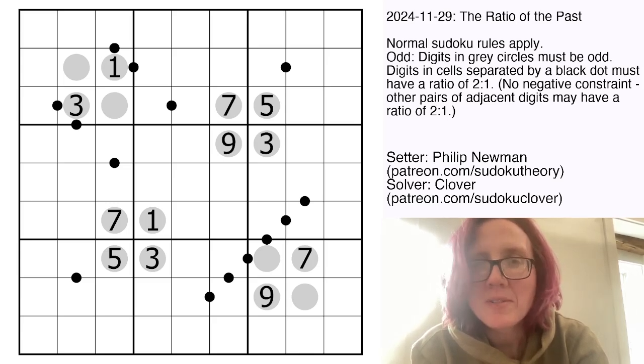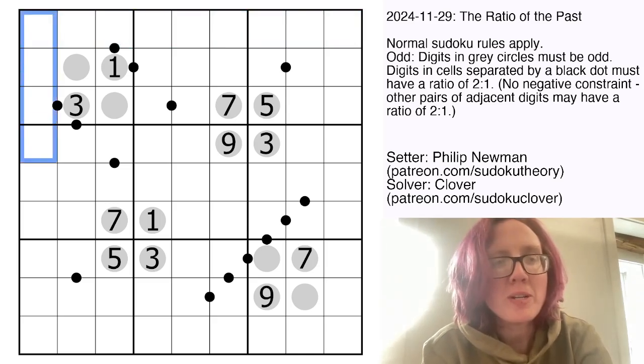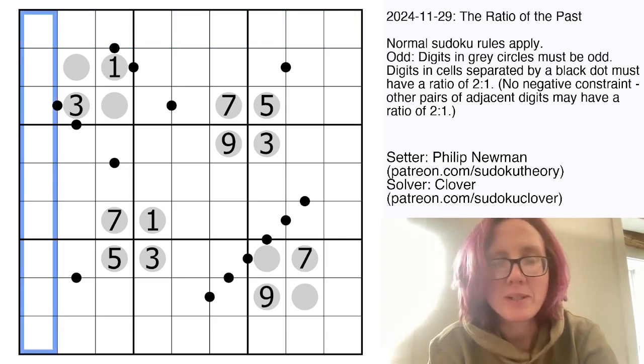Normal Sudoku rules apply. We're placing the digits 1 through 9 once each in each row, each column, and each outlined 3x3 region.